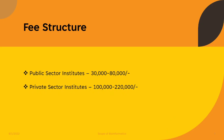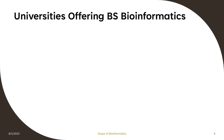Coming towards the fee structure, it can vary greatly among universities as well as by sector. If you are targeting public sector universities, the fee can lie between 30,000 to 80,000 rupees per semester. If you are targeting private sector universities, your semester fee can be between 1 lakh to 2 lakh 20,000 rupees per semester.